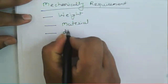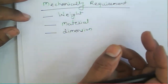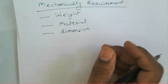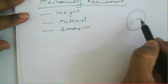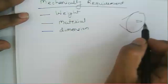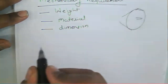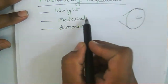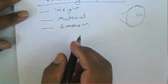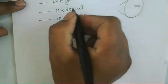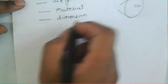Weight also depends on the antenna dimensions. For example, if it is a dish antenna, we need to determine the size of the dish. While designing the antenna, we must consider the weight, material, and dimensions to achieve the desired beam width and performance.